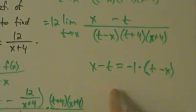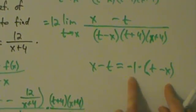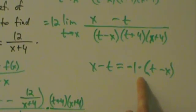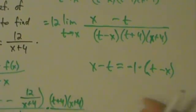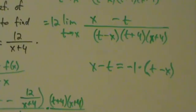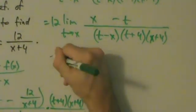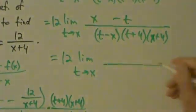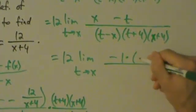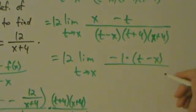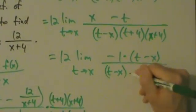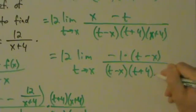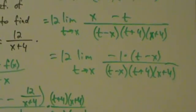If you haven't done this before it might be tricky, but the key is to remember that x minus t equals negative 1 times the quantity t minus x. Essentially we factored out a negative 1 from x minus t. It might be easier to see going right to left: start with negative 1 times t minus x, distribute the negative 1, and you get negative t plus x, or in other words x minus t. So we'll rewrite the top as negative 1 times t minus x.